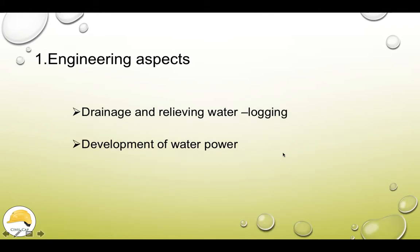The next point is drainage and relieving water logging. We use the well as the field and use the soil conditions — that is water logging. That is why we use drainage systems: subsurface drainage and surface drainage. The next point is development of water power. The main category of water power is generated using soil temperature. It is mainly used in Kerala.